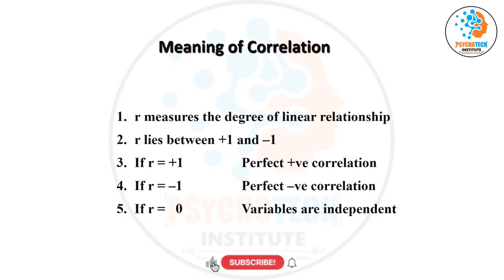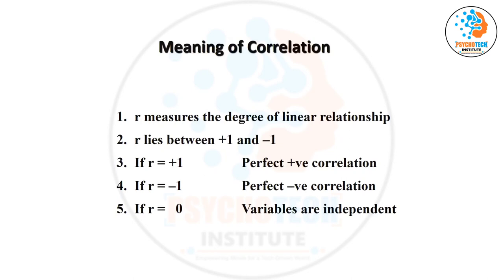If the correlation is 0, it means there is no linear relationship — the variables are independent linearly. Correlation only provides information about the linear relationship. So if the option says 'variables are independent,' choose 'variables are not linearly related.' The range for correlation is plus 1 to minus 1. If it is plus 1, positive correlation; if negative, negative correlation.